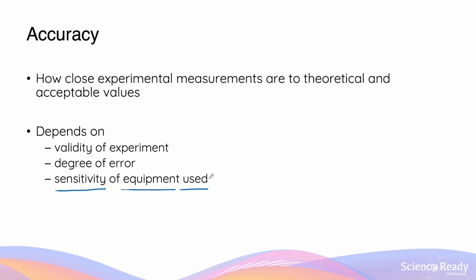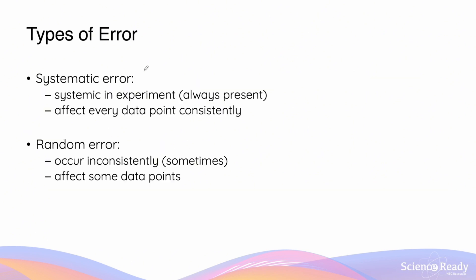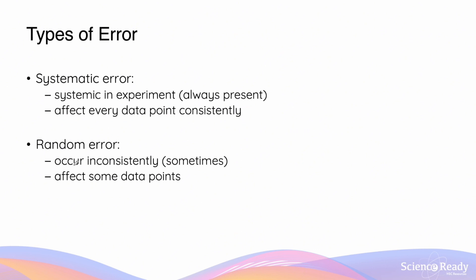By way of review, errors can be grouped into two types: systematic and random. Systematic errors are systemic to the experiment — they are always present no matter which repetition or at what time the experiment is done. Because they're always present, they affect every single data point consistently, and the effect of the systematic error is identical or similar for every data point.